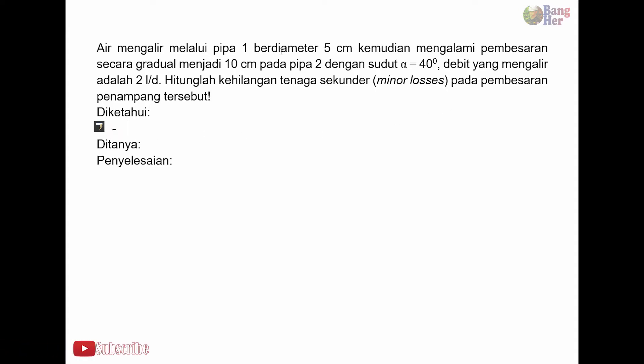Diketahui, diameter pipa 1 adalah 5 cm. 5 cm kalau diubah ke dalam meter dibagi 100, hasilnya adalah 0,05 meter. Diameter pipa 2 adalah 10 cm. 10 cm kalau diubah ke dalam meter dibagi 100, hasilnya 0,1 meter. Sudut alfa nya 40 derajat.